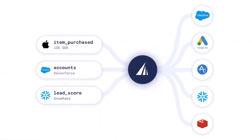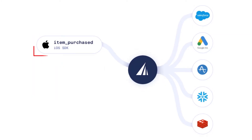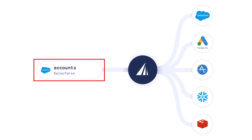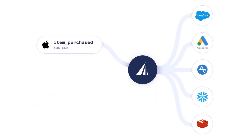With RudderStack Cloud, building customer data pipelines is simple and secure. Let's dig into the features of RudderStack Cloud. There are three main components to RudderStack: our event stream and integrations library, our ELT pipelines, and our warehouse actions. Let's start by taking a look at the event stream and integrations library.